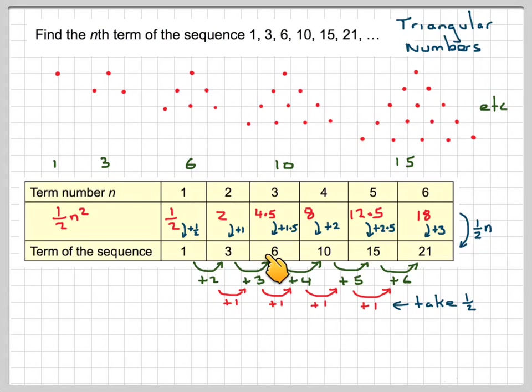So what we do when we've got this, we've got a new sequence and it is a linear sequence, it's just a half of n. So the nth term is going to be a half of n squared plus a half of n.